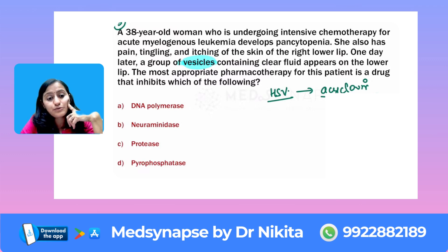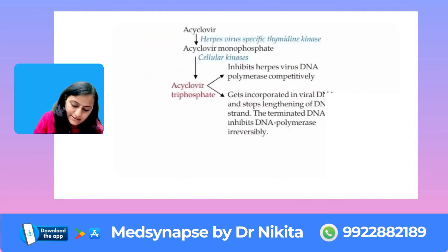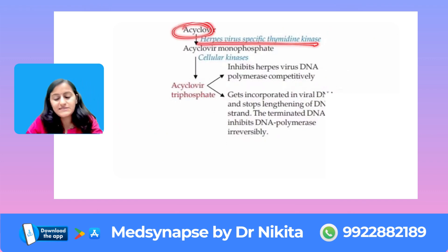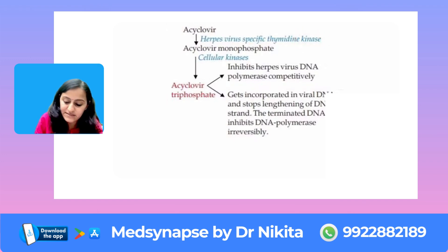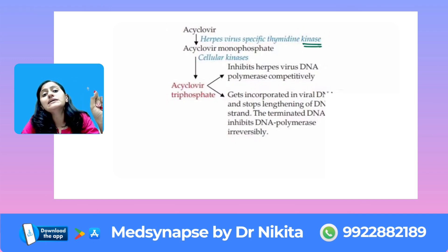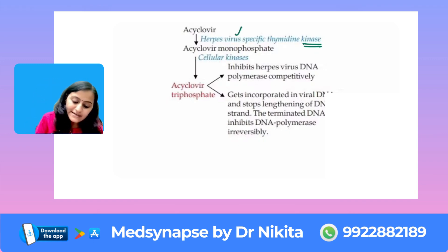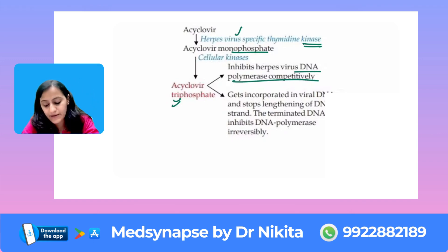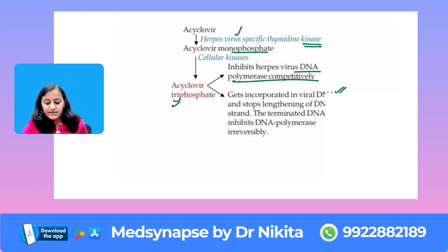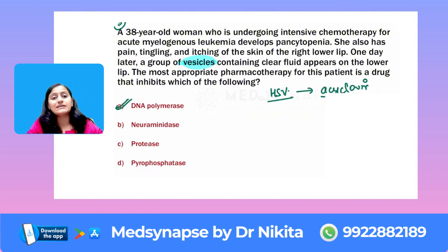You know the drug of choice for HSV is acyclovir. What is the mechanism of action of acyclovir? Acyclovir is activated by herpes virus-specific thymidine kinase — remember this enzyme is thymidine kinase and not thymidine synthetase, and it is virus-specific. It is converted to monophosphate, then acyclovir triphosphate, which inhibits DNA polymerase and leads to termination of DNA replication. It stops the lengthening of the DNA strand. So the answer here is that acyclovir inhibits DNA polymerase.